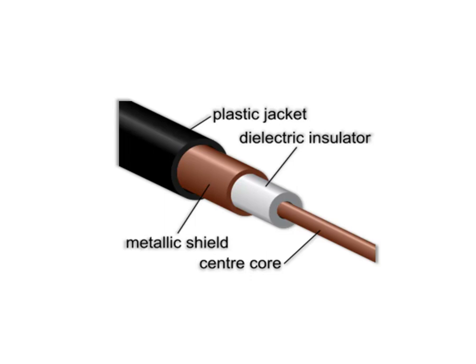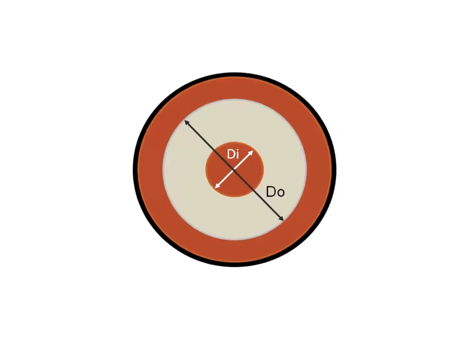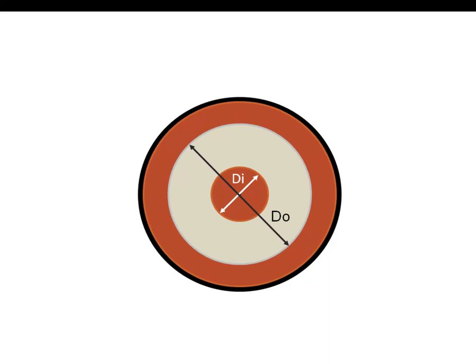Let us remind ourselves of what a coaxial cable looks like. Inside the cable we've got a centre conductor, shown as the centre core, and around it we've got a dielectric material which insulates it from the outer conductor, which forms a metallic shield usually connected to ground. If we look at a cross-section of this coaxial cable, DI is the diameter of the inner conductor and DO is the inner diameter of the outer conductor, or the diameter of the dielectric material.